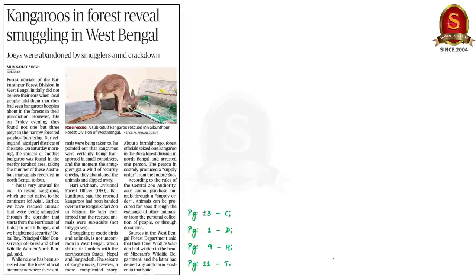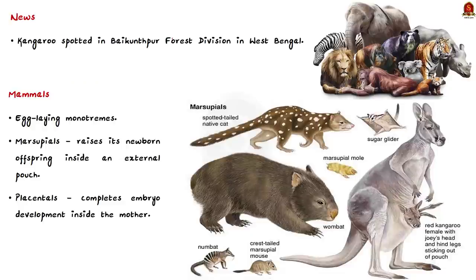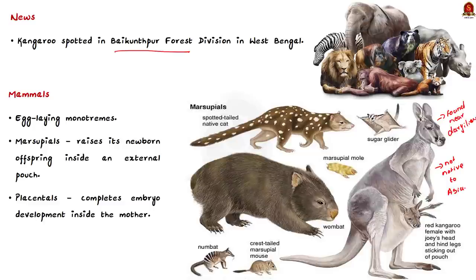This article is about the presence of kangaroos in Baikunthpur Forest Division in West Bengal. The forest officials also did not believe it at first because kangaroos are not native to Asia. But they found 3 kangaroos in the narrow forested patches bordering Darjeeling in Jalpaiguri district. The carcass of another kangaroo was found in the nearby area, taking the number of these Australian marsupials recorded in North Bengal to 4.